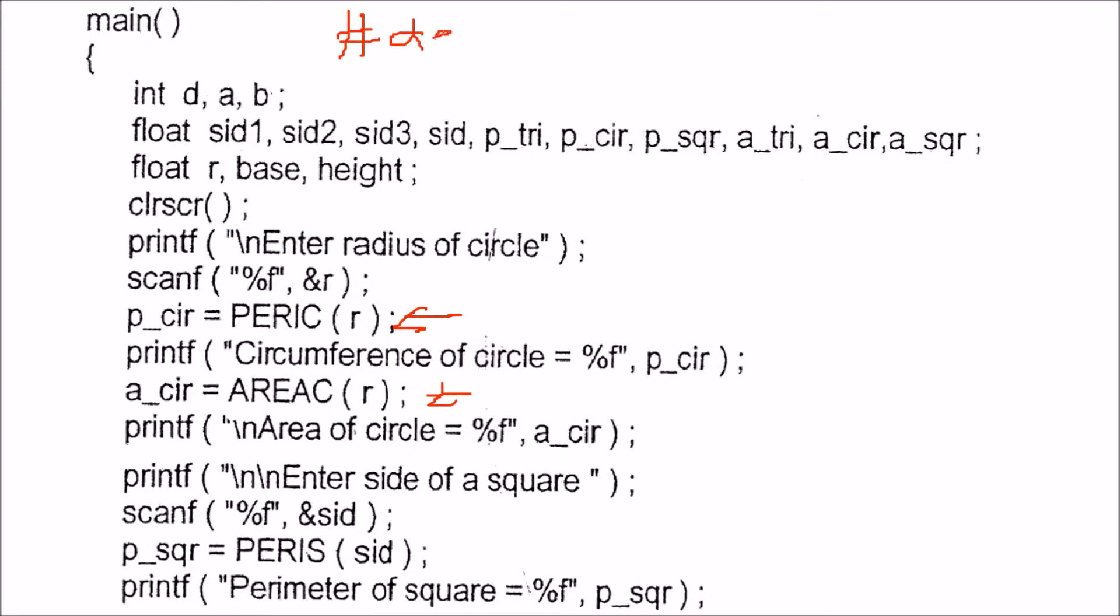Hash define. Then we have peric. So I'll write PERIC, then I'll pass some r as parameter and I know that it is 2 pi r. So 2 into pi say 3.14 into r, this r. And I can also define hash pi as 3.14 and whatever value you have. So you can write pi also here. This is up to you.